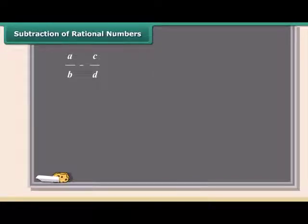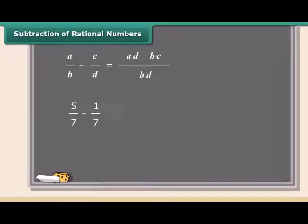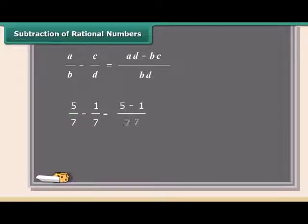Subtraction of rational numbers is the same as addition. Before subtracting, always look for the common denominator. If it's not common, multiply both parts of each number by the bottom part of the other. For example, we will subtract 1 by 7 from 5 by 7. The denominators are already the same, so subtract the numerators and put the answer over the same denominator.